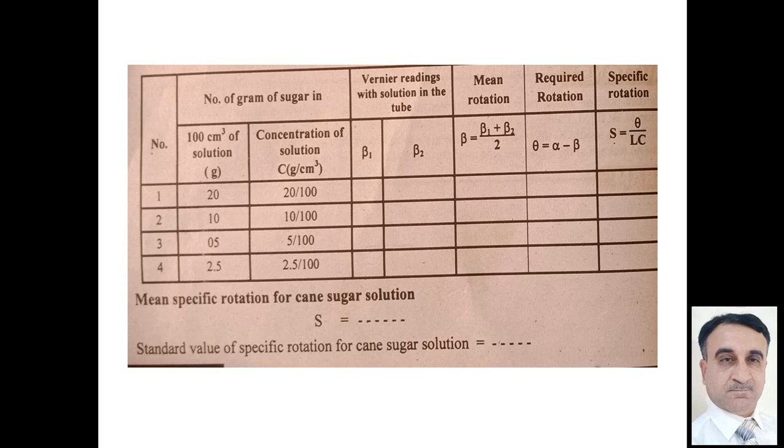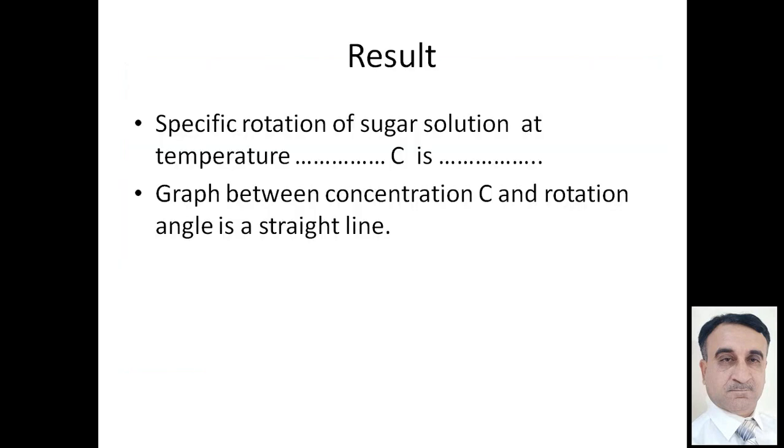We check that our answer is correct or has error. We will compare the actual value or standard value to our measured value. Result: specific rotation of the sugar solution at temperature C is measured. Graph between concentration C and rotation angle is a straight line. This graph shows that with increase in concentration the rotation angle increases. This graph will be a straight line.